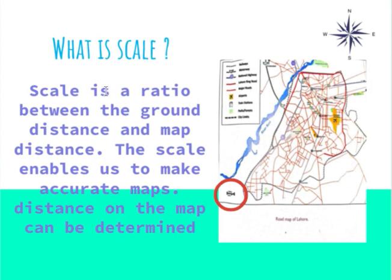What is Scale? Scale is the ratio between the ground distance and map distance. The scale enables us to make accurate maps and the distance on the map can be determined. This is a scale — it tells us the ratio between the ground distance and the map distance.